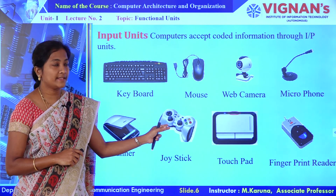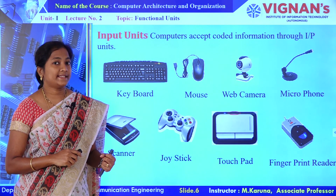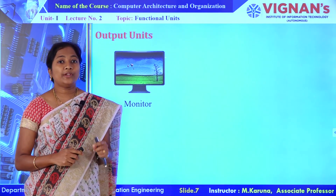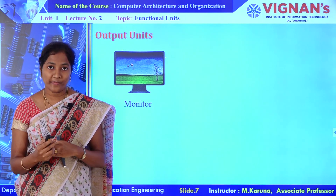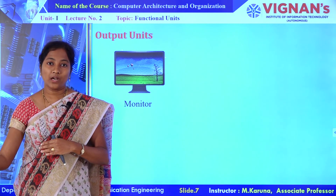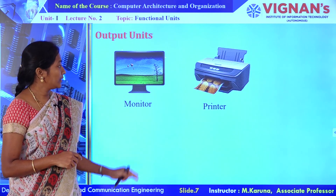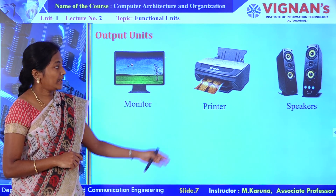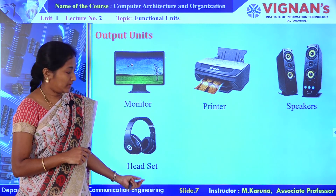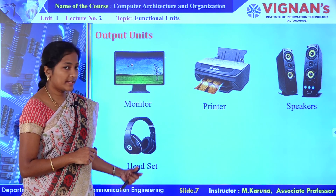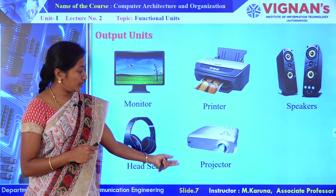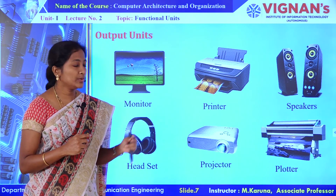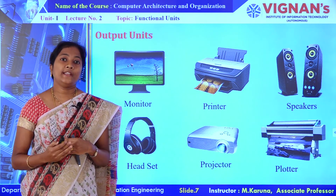With the help of all these input devices, the information can be accessed from the outside world for the purpose of processing. Coming to the output units: after processing the data or information, the processed results will be transferred to the outside world through devices. Monitor can be used for data visualization. Printer: we can take printouts with the help of this printer. Speakers: we can listen to music. Headset: we can record or listen to voice. Projector: we can project our contents with the help of this projector. And also we can plot some images with the help of a plotter. These are all output units which are used to deliver or transfer the processed data to the outside world.